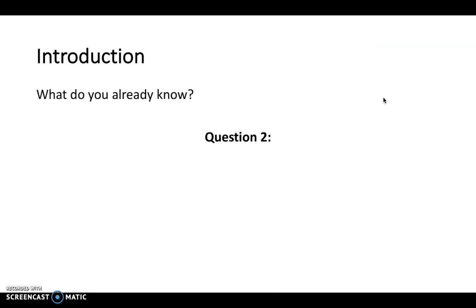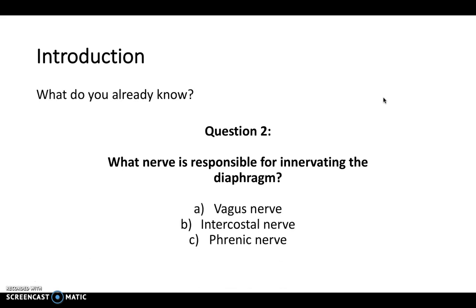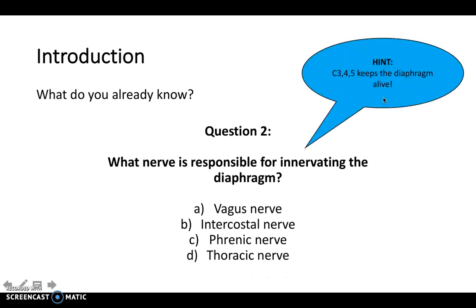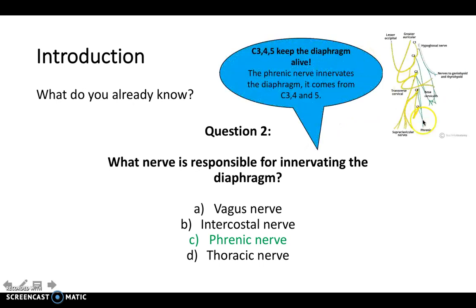Question 2: which nerve is responsible for innervating the diaphragm — the vagus, the intercostal, the phrenic, or the thoracic? Think about 'C345 keeps the diaphragm alive.' C3, 4, and 5 is where the phrenic nerve originates, as you can trace the phrenic nerve back to cervical 3, 4, and 5 respectively.